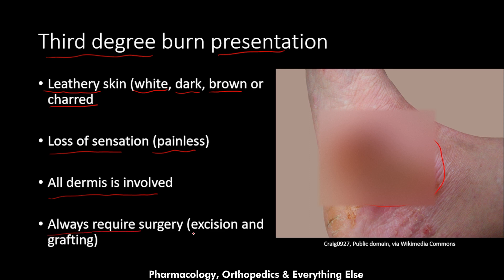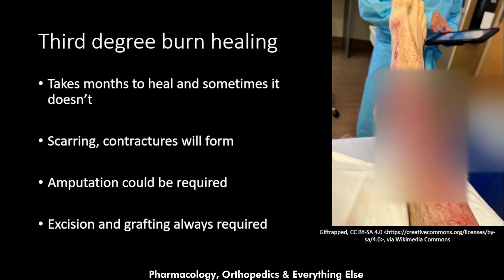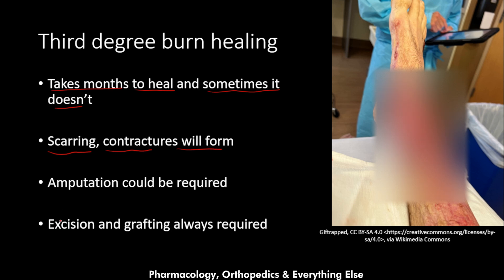Third degree burns always require surgery — excision and grafting, and sometimes amputation. They take months to heal, and sometimes they do not heal. Scarring and contractures will form. As we can see in this picture, this is a third degree burn that has been excised and grafted with a mesh graft.